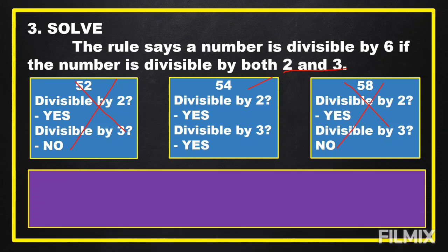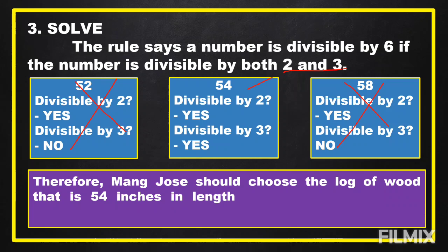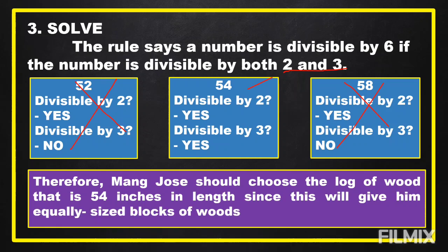Therefore, Mount Cardo should choose the length of wood that is 54 inches, since this will give him equally sized lengths of wood without any excess.